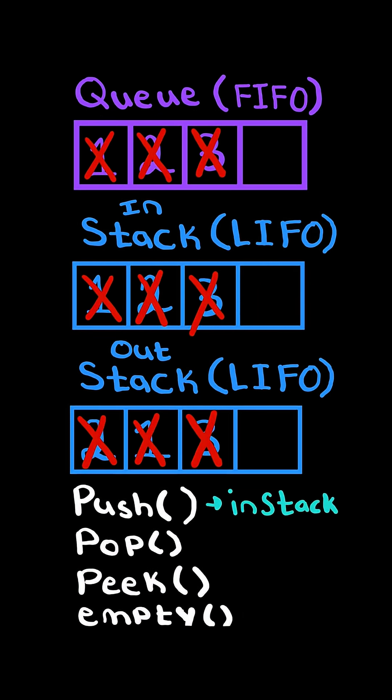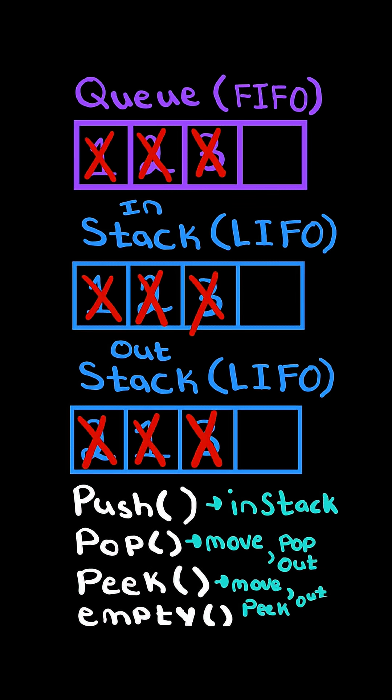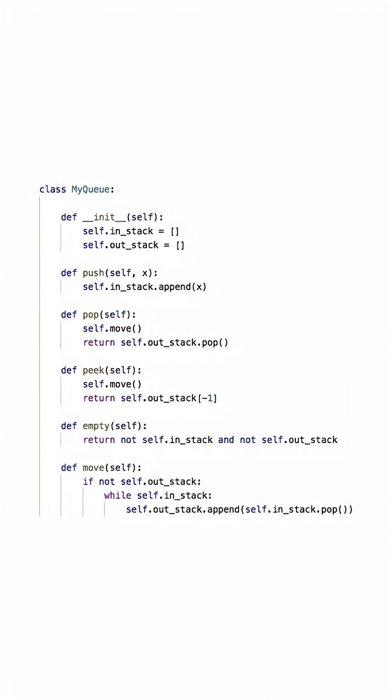To summarize: for push, we push to the in-stack. For pop, we first move all elements from the in-stack to the out-stack only if the out-stack is empty, then pop from the out-stack. A similar idea applies for peek. Here's the code to do so.